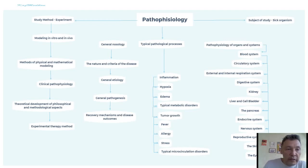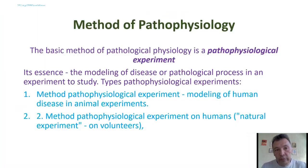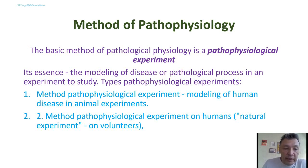Methods of study in pathophysiology include the main method of experiment, modeling in vitro and in vivo, methods of physical and mathematical modeling, clinical pathophysiology, and theoretical development of philosophical and methodological aspects. The experimental method in pathophysiology involves the modeling of disease or pathological processes in experiments to study types of pathophysiological experiments.